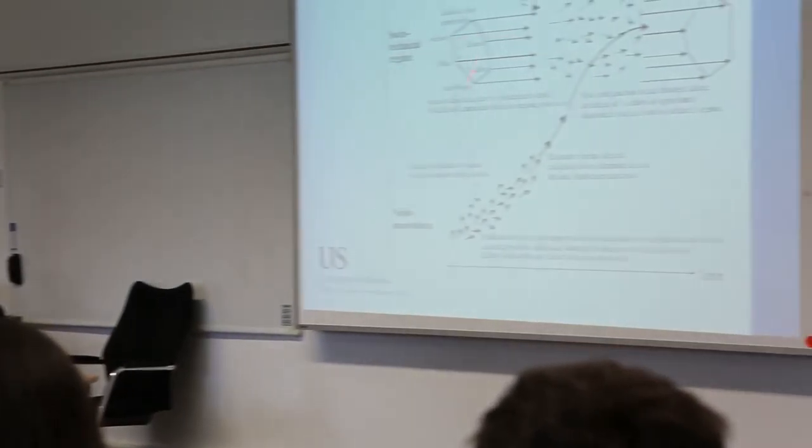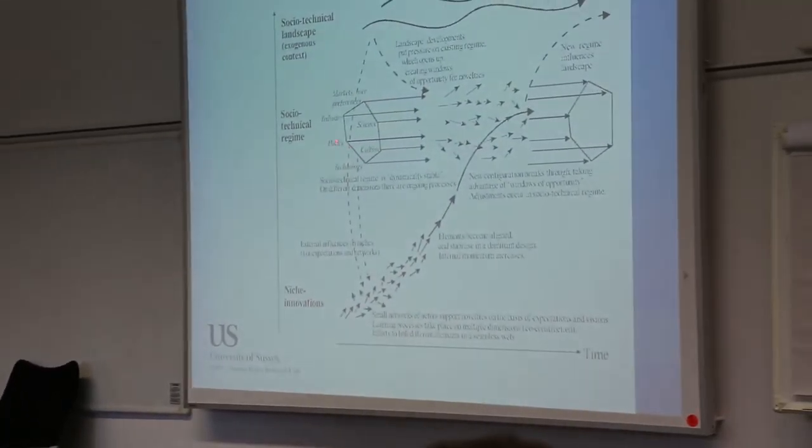Well, you need a change of a social technical regime. That's the core concept. And the basic idea here is that people, agents, are driven by routines. So we are not driven by rational decisions or ideology or perception. We are basically driven by routines. And these routines are embedded in the material world, but also in regulations and policies. And all these things are aligned. Therefore, it's very difficult to change. So these are the genes of systems. How does a change of a social technical regime come about?